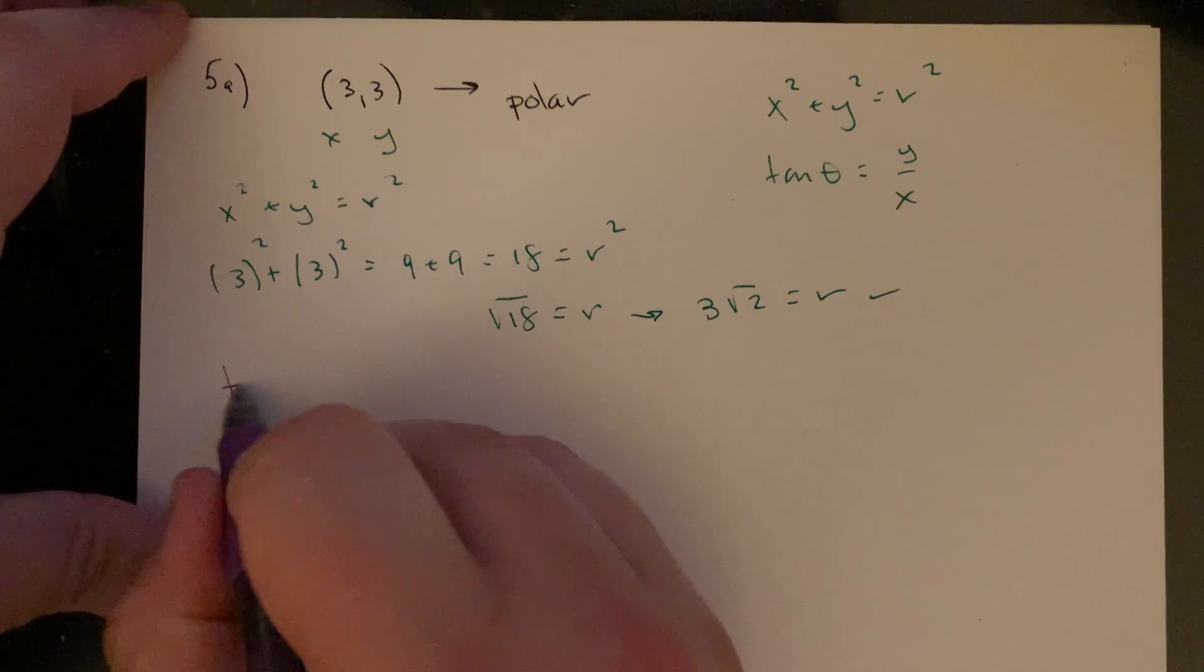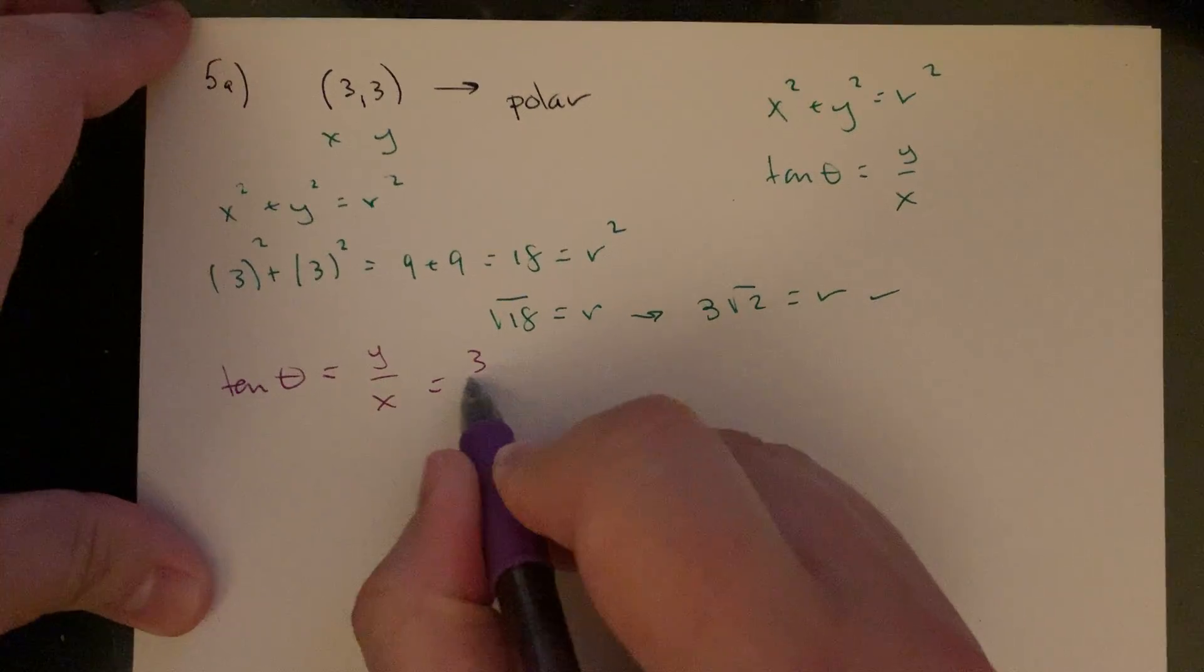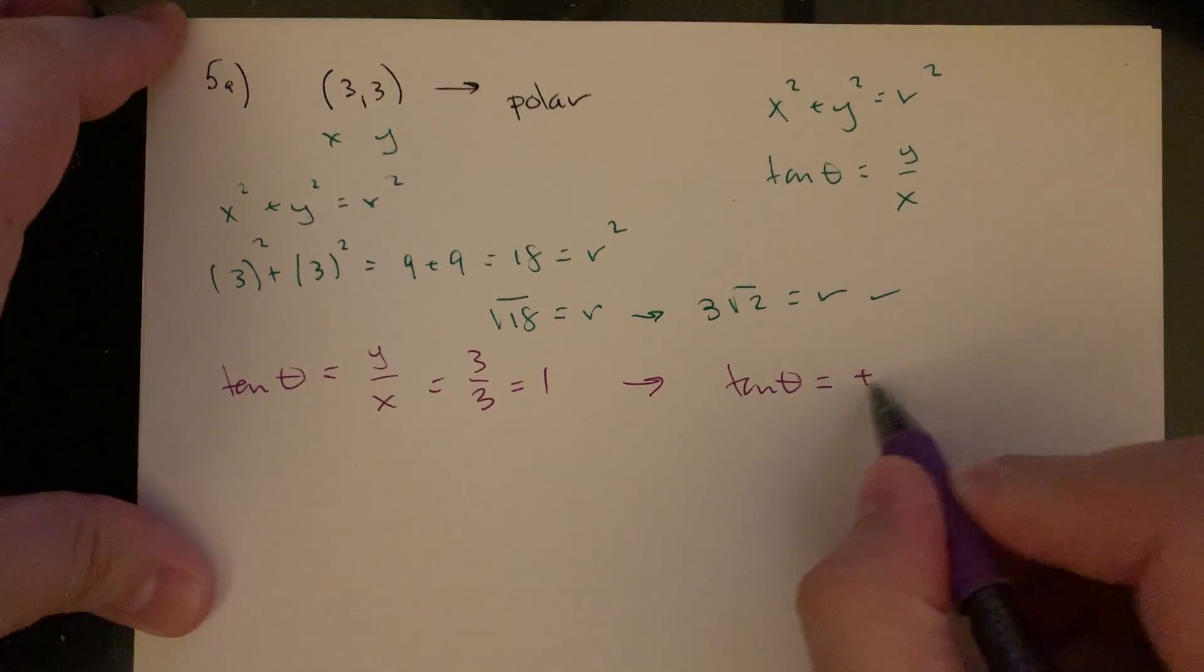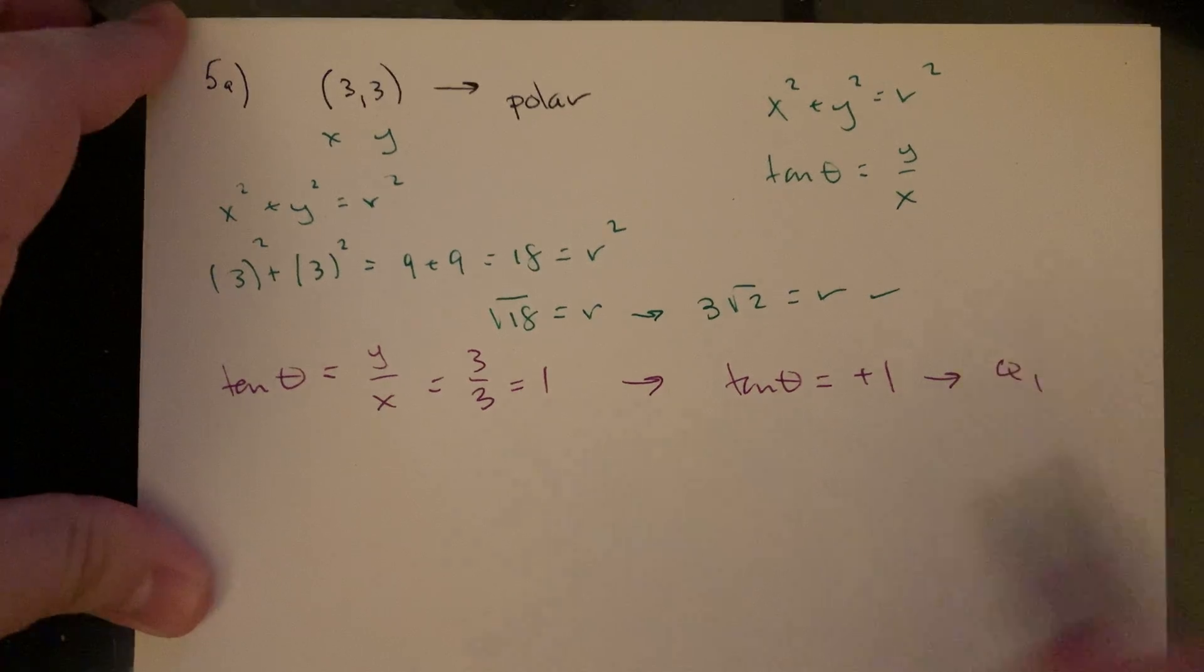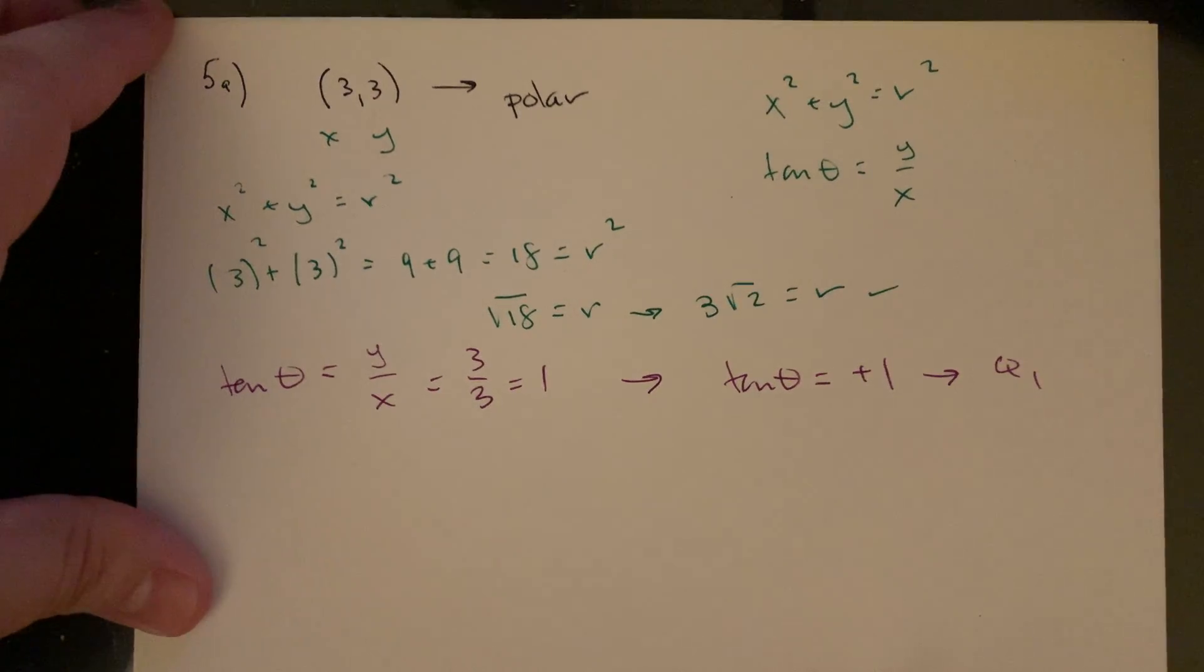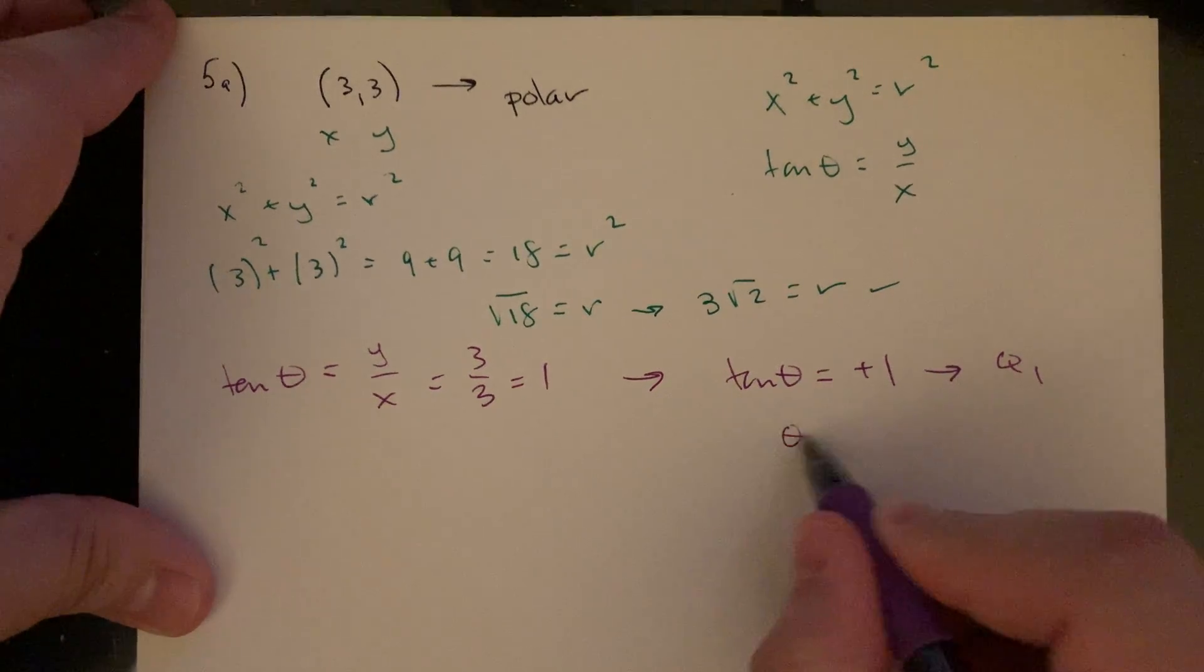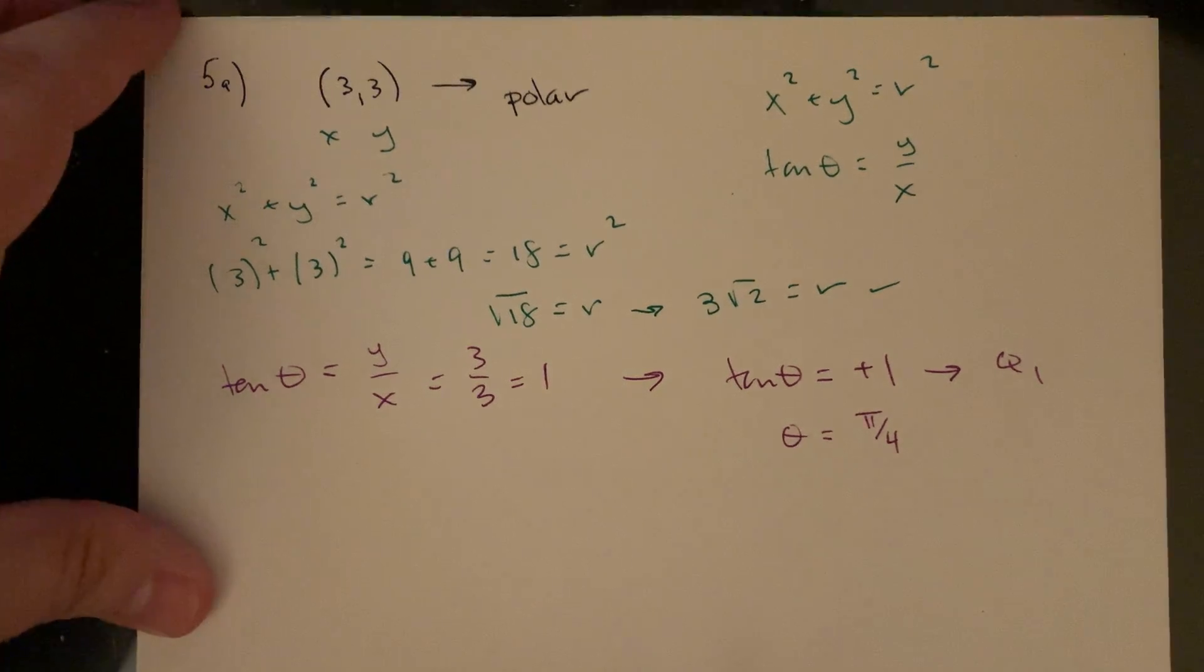Our angle, the tangent of theta should be y over x, which in this case would be 3 over 3, which is positive 1. So tangent of theta equals positive 1, and this point (3,3) is in the first quadrant. So I need an angle where the tangent is 1 and I'm in quadrant 1. That would of course be my 45 degrees, otherwise known as pi over 4 in radians.